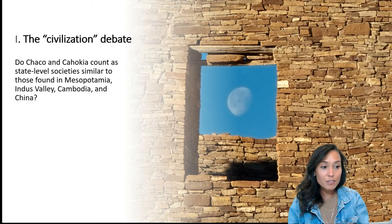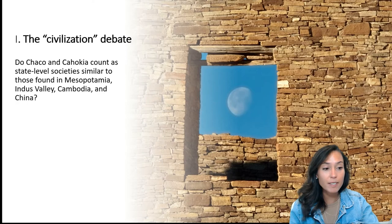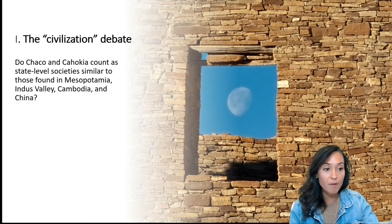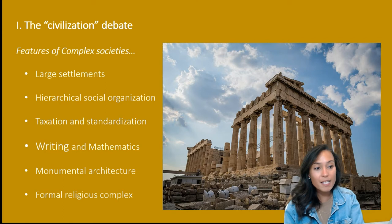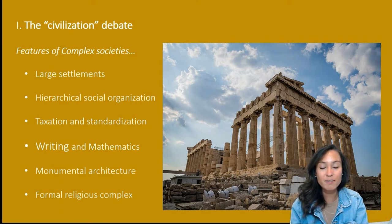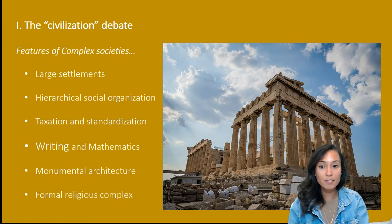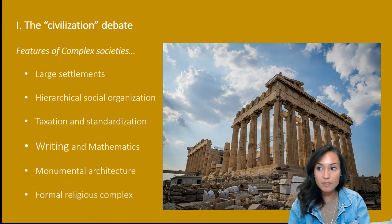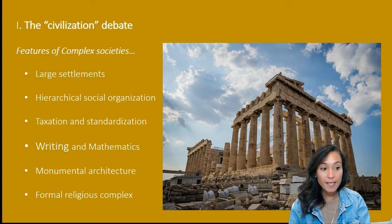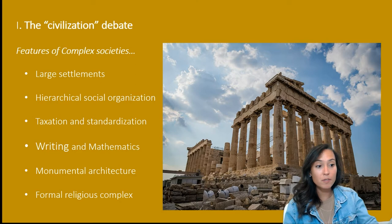One of the big questions that arises is why places like Cahokia and Chaco seem to be excluded from discussions of civilizations. To answer this, let's return to the features of complex societies from Module 4.1. Archaeologists typically think about civilizations as containing material evidence of large settlements, hierarchical social organizations, taxation and standardization, writing and mathematics, and monumental architecture.